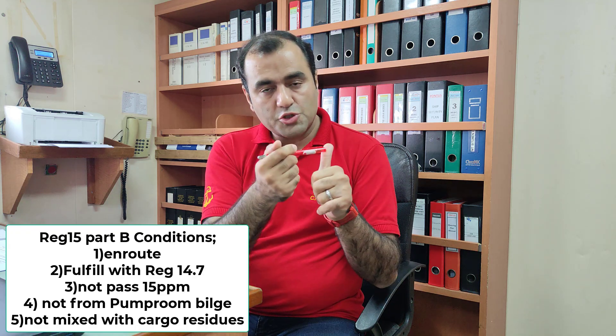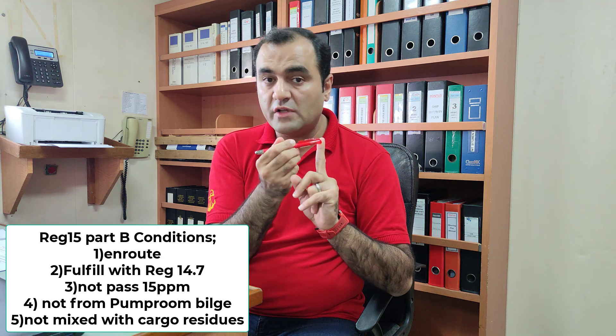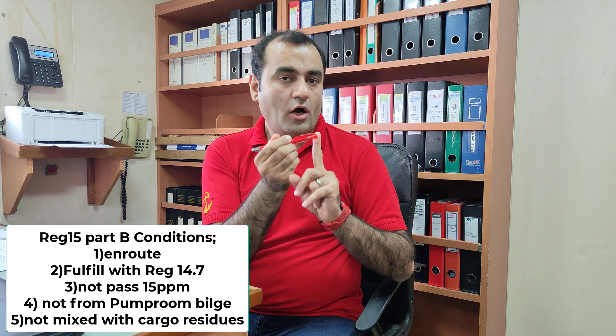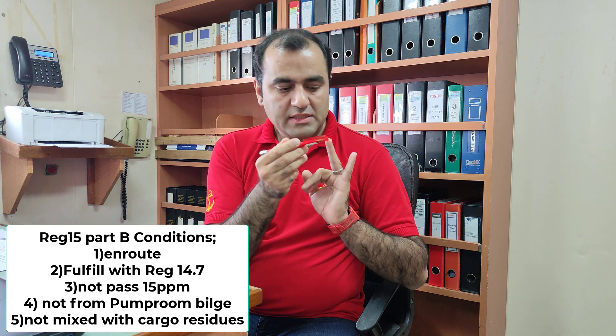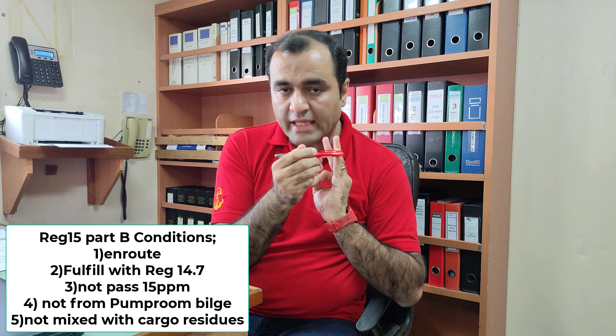To summarize Part B of regulation 15: these are the requirements allowing you to discharge oil mixture even in special areas. You shall be en route, fully comply with regulation 14 paragraph 7, the 15 ppm limit shall not be exceeded, and for oil tankers the fourth and fifth conditions apply — the oily mixture shall not be generated from pump room bilges or cargo residues.